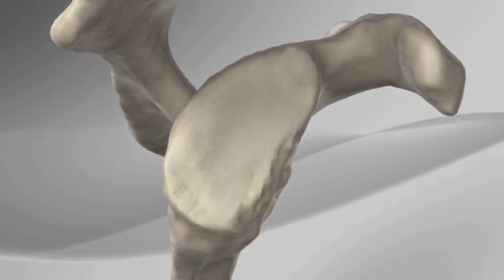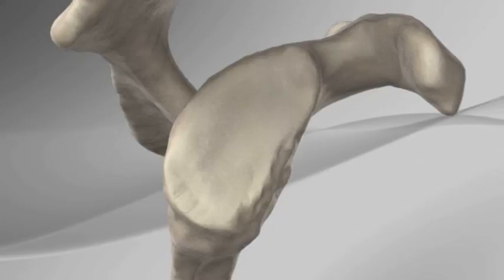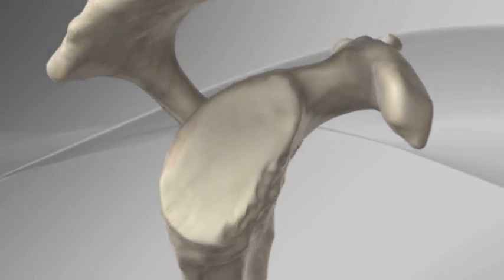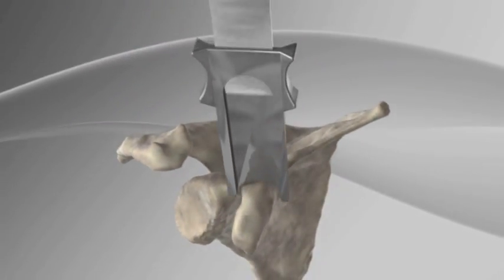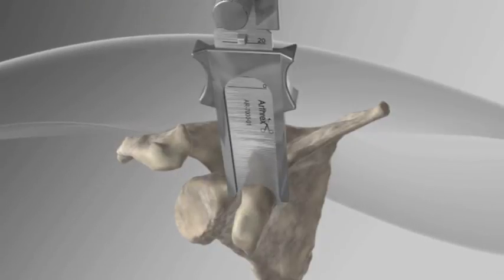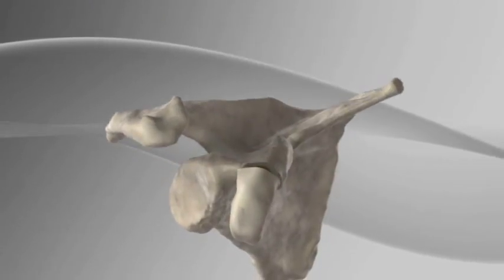The socket of the shoulder, or glenoid, can be damaged by multiple shoulder dislocations. This often results in bone loss of the anterior inferior portion of the glenoid. To replace this lost bone and prevent future dislocations, the surgeon will cut off a piece of the coracoid, a part of the shoulder blade.